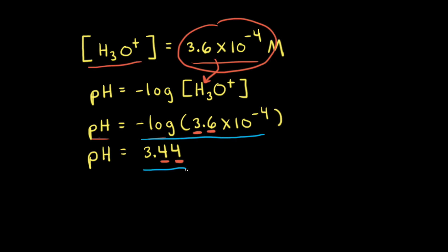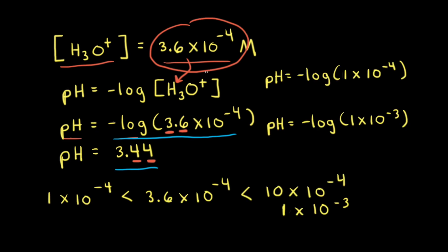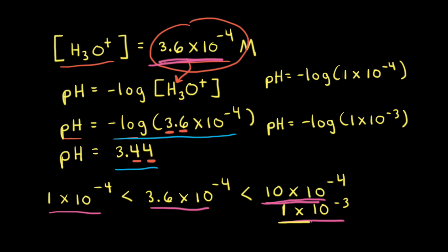However, there's a way of estimating the pH without using a calculator. The first step is to recognize that 3.6 times 10 to the negative fourth is between 1 times 10 to the negative fourth and 10 times 10 to the negative fourth. 10 times 10 to the negative fourth is the same thing as 1 times 10 to the negative third. If the concentration of hydronium ions is 1 times 10 to the negative third, the pH would be equal to 3.